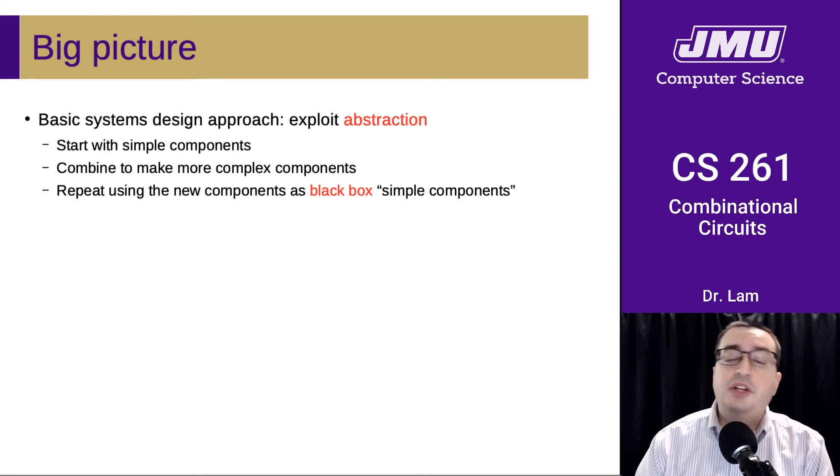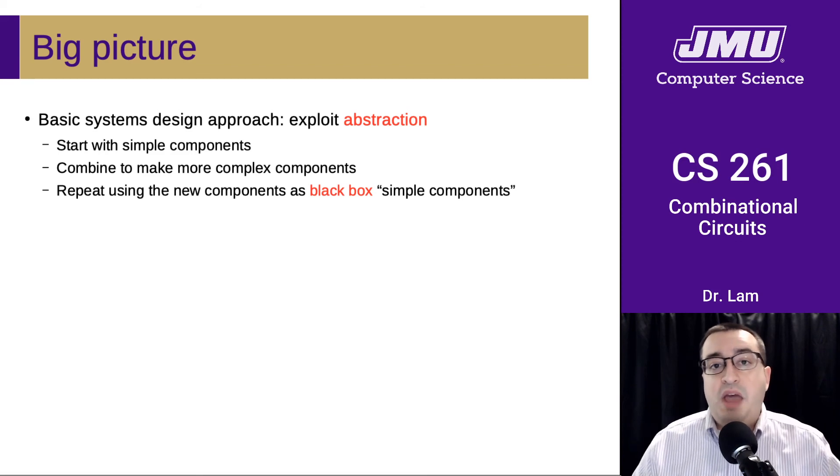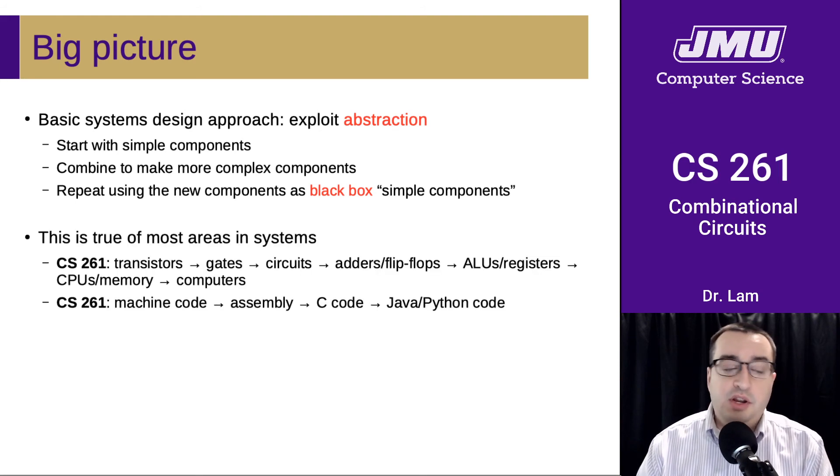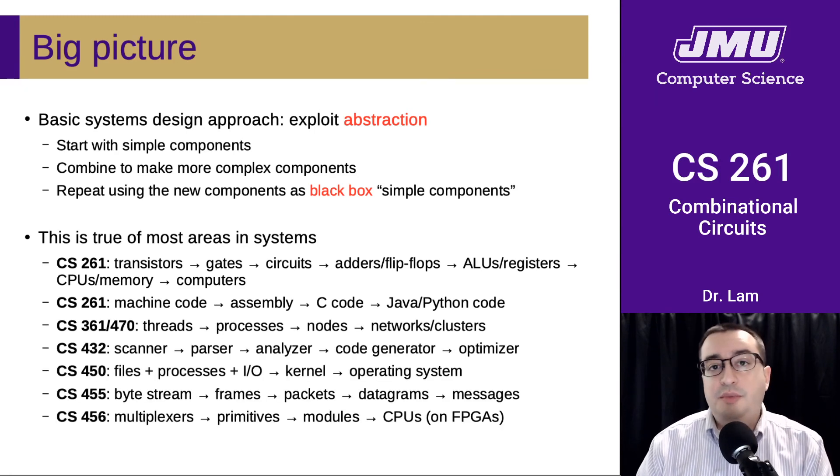And the key here is that we're able to ignore the details for the smaller things because we can look at them as this opaque box where we have ignored the details of what's going on inside. And this is true of most areas in systems. We've seen this in 261 with the stuff that we've done today. We've also seen how we've been able to use C as sort of an abstraction over assembly, which is itself kind of an abstraction over machine code. And then Java and Python are an abstraction. A lot of the Java and Python subsystems are written in C in many cases. And this is also going to be true in all the other systems courses that you take. The details aren't important here. But what I want to emphasize is that this concept of abstraction in systems design is a really important concept. And it's one that's used all over computer science and especially in systems.